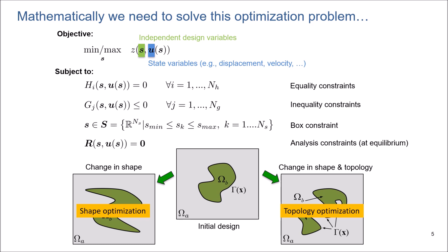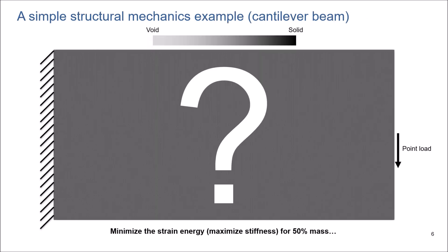To visually show what topology optimization does, let me give you a simple real-world application example in the area of structural mechanics. I have a 2D cantilever beam fixed on the left edge, and I am applying a point load in the middle on the right. For this beam, I want to minimize the strain energy or maximize the structure's stiffness subject to 50% mass utilization.